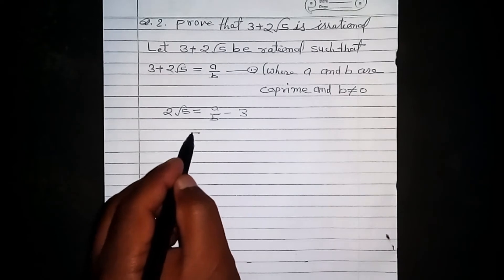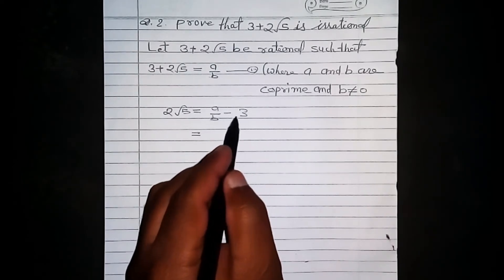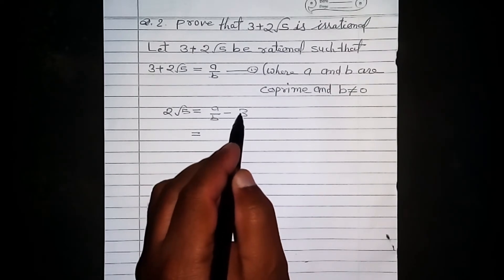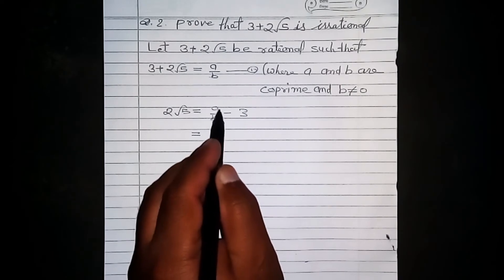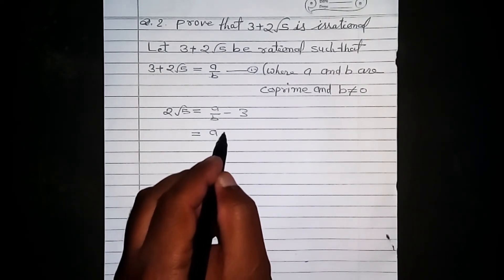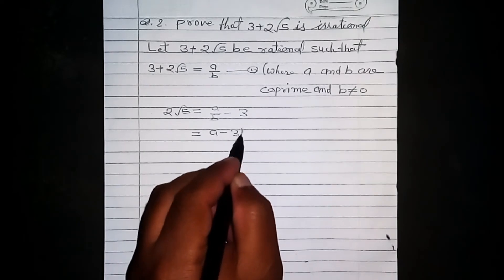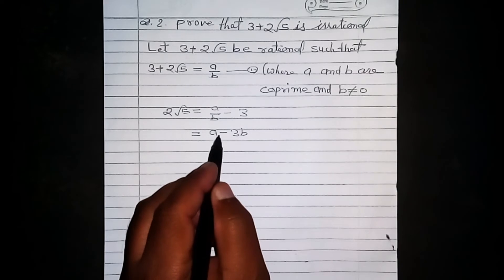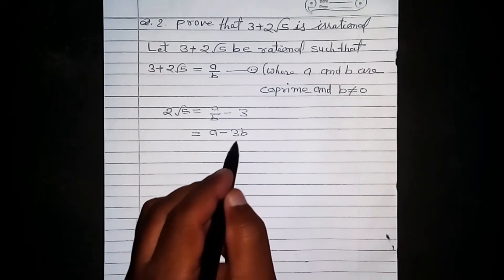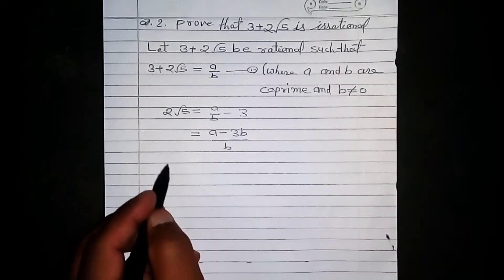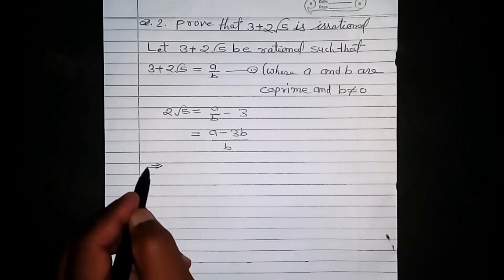This is equal to, let us multiply 3 by b and subtract 3b from a, and we have a minus 3b, and we will divide the difference of a and 3b by b. This implies that 2 root 5 is equal to a minus 3b by b.